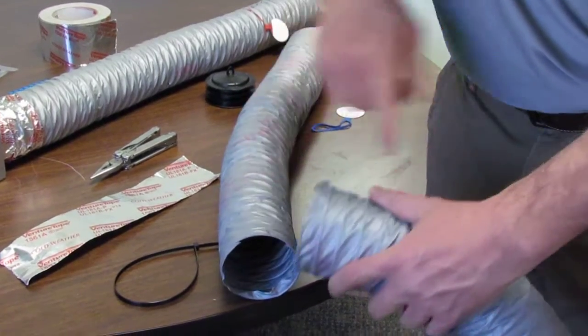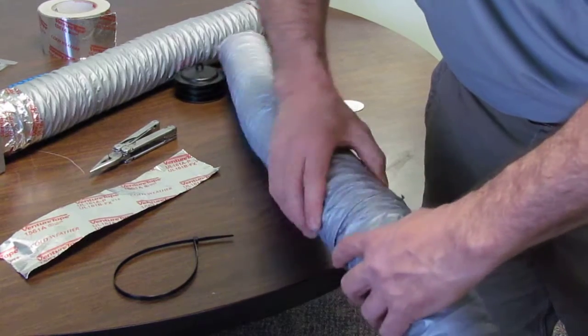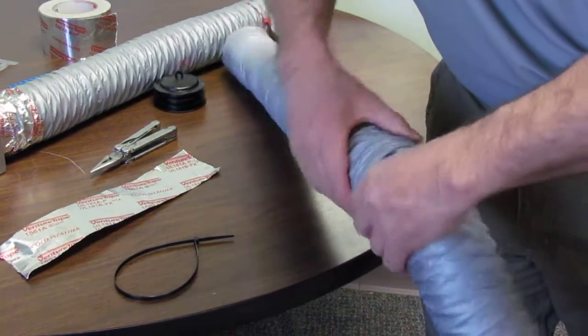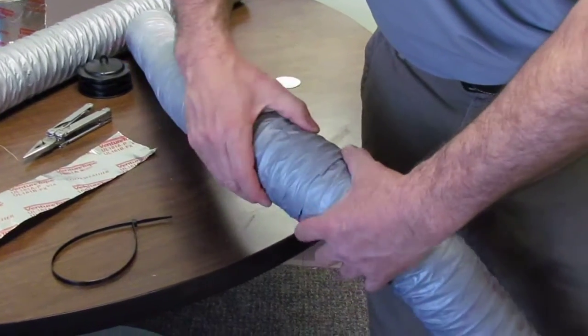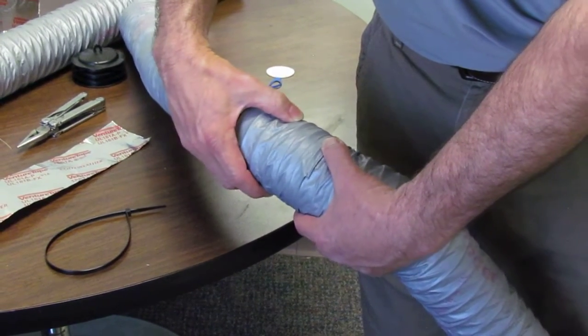Once we have that bend in, if our airflow is going in this way, then this one threads into this one. Just twist it right on. You can feel how far it's going in and you want to overlap by about three threads, approximately two and a half inches or so.